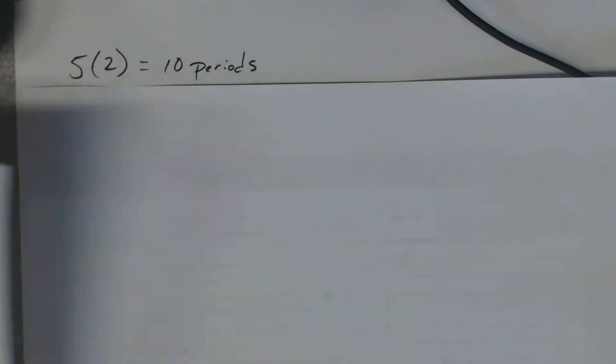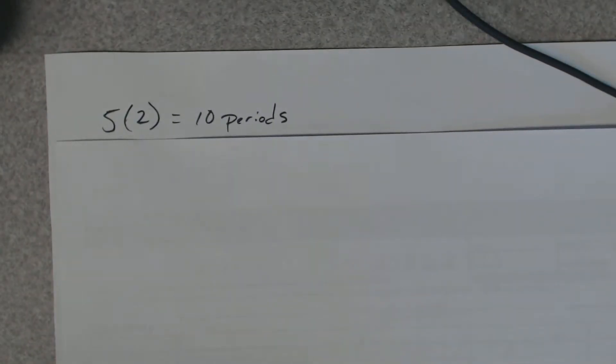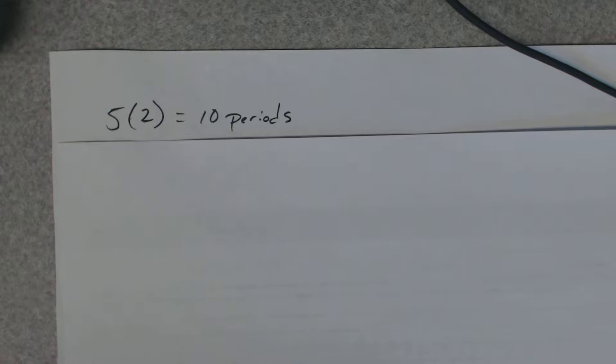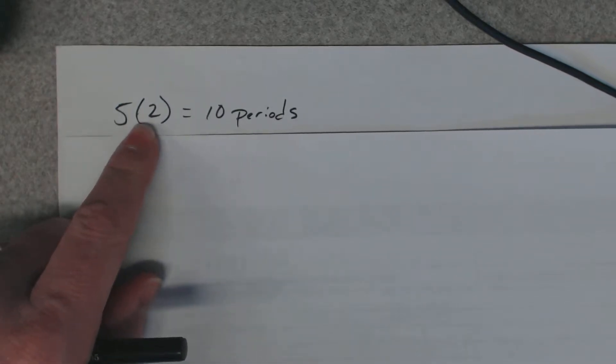What we need to do then is figure out our periods. We're going to use a table here. To find the table, we've got the periods. There's 10 periods, five years. He's going to do this semi-annually.